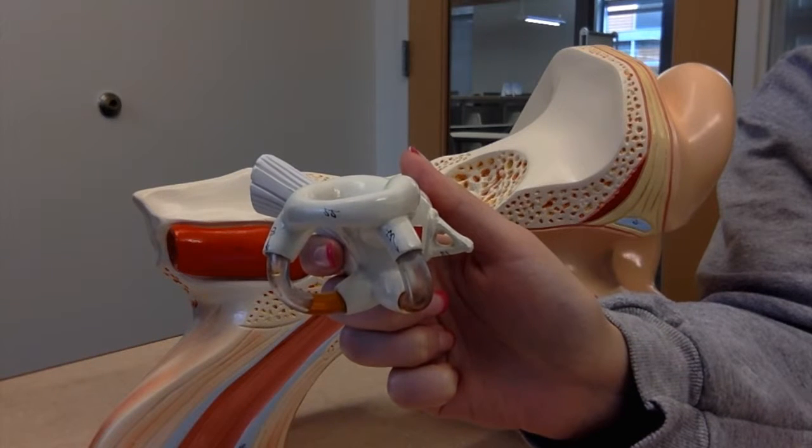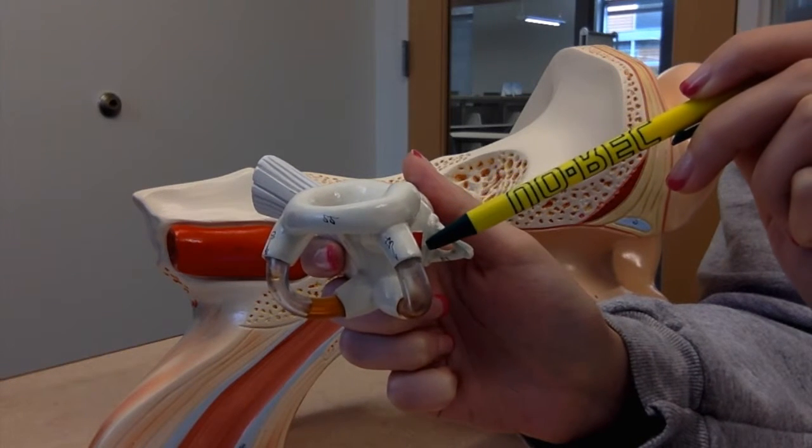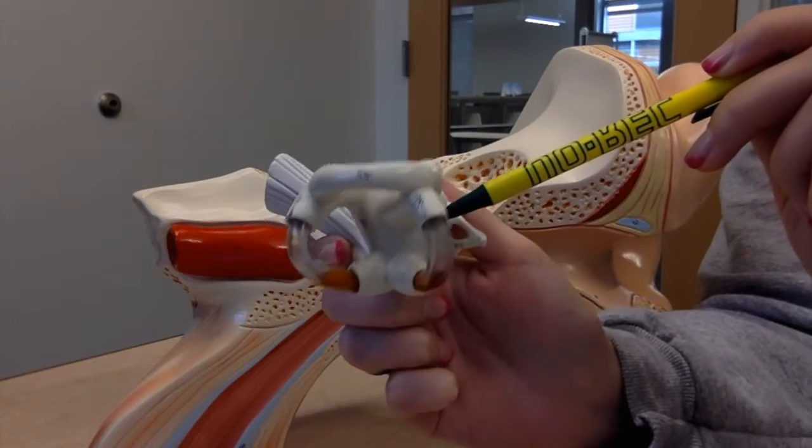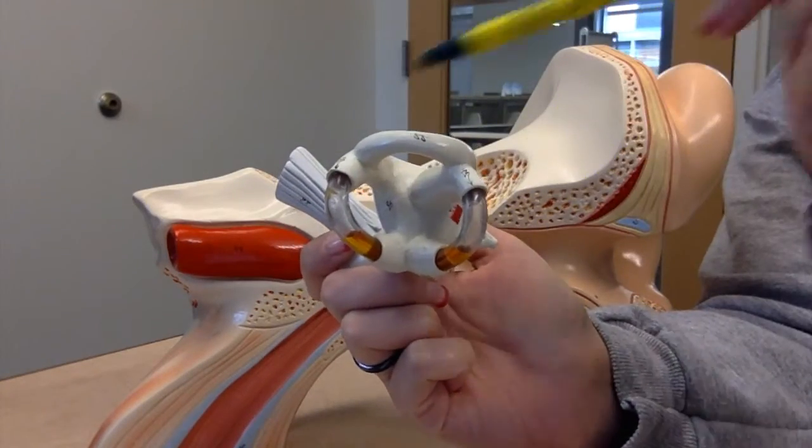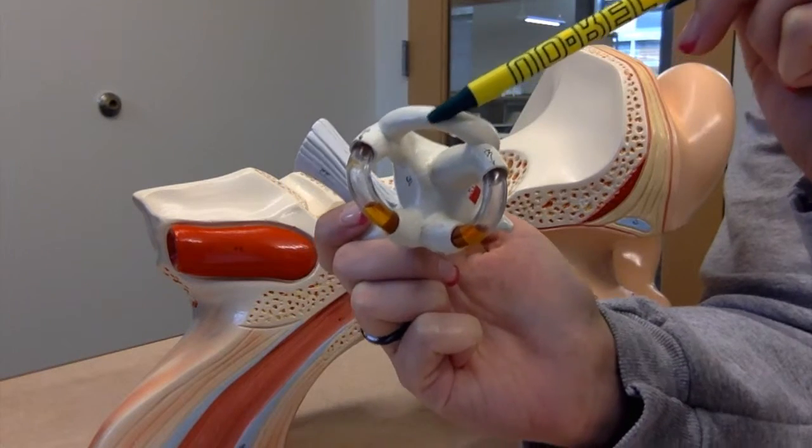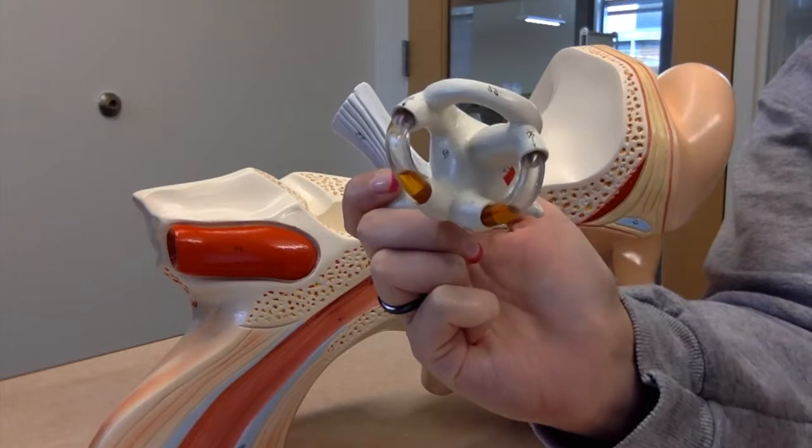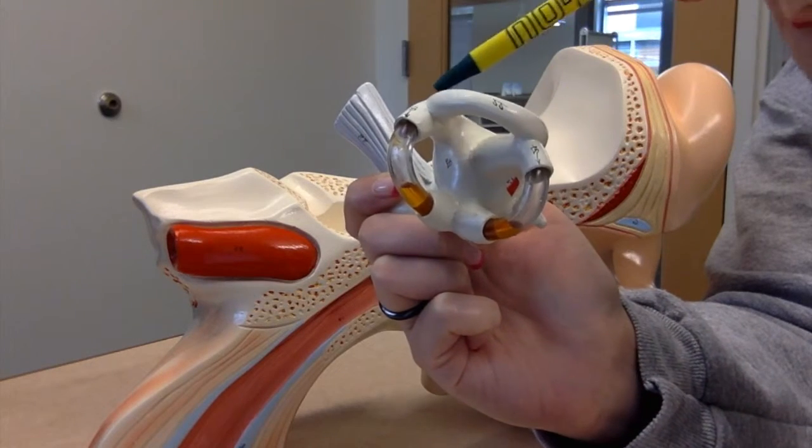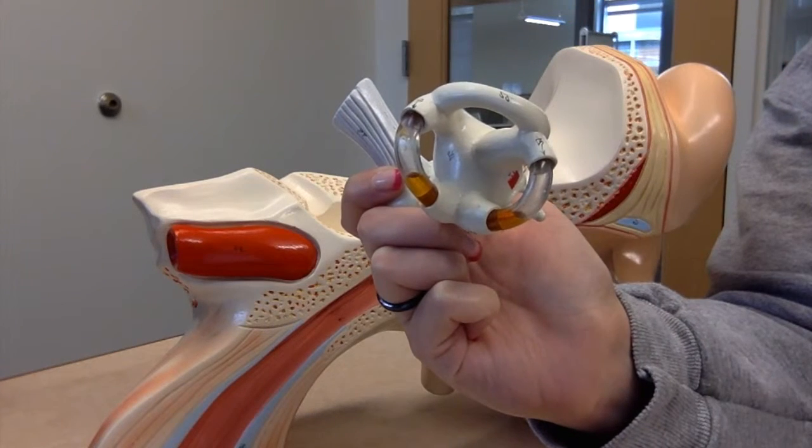The inner ear starts once the stapes pushes on the oval window and sends a mechanical signal to the inner ear. This energy is sent to the semicircular canals, which are the three rings here. There is a superior, posterior, and lateral semicircular canal. The outside of the semicircular canal is called the bony labyrinth, and the fluid you can see inside is called endolymph. We will learn more about the fluid in the ear later.